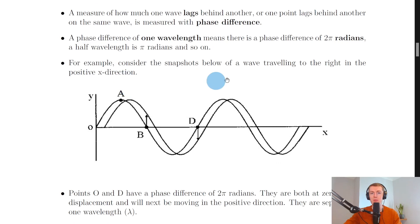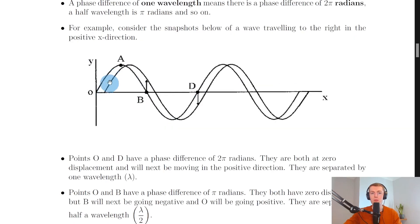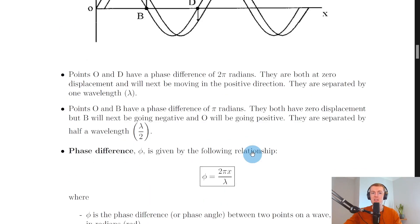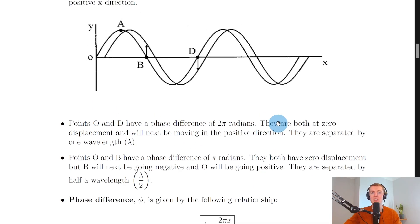For example, consider the snapshots below of a wave travelling to the right in the positive x direction. Here we've got different points labelled A, B and D and you can see this wave to the left lags behind the one to the right. Points O and D have a phase difference of two pi radians.